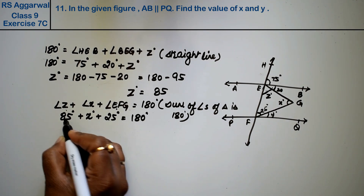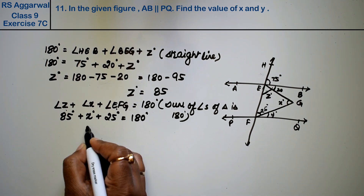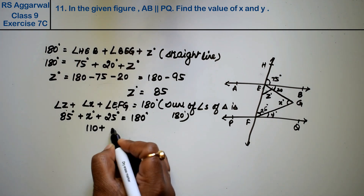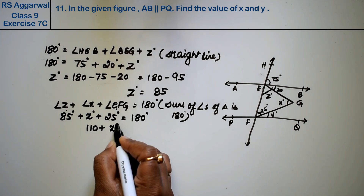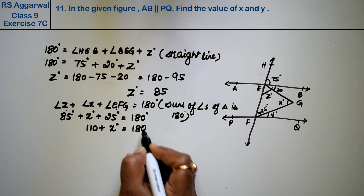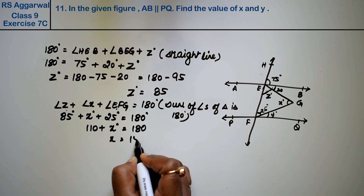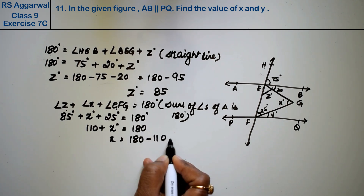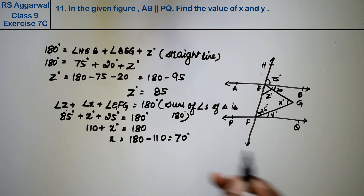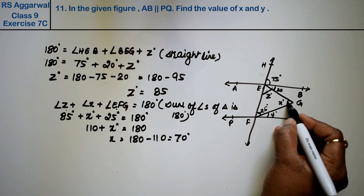So 85 plus 25 equals 110. Therefore 110 plus X equals 180 degrees. So X equals 180 minus 110, that is 70 degrees. So X has come out to be 70 degrees.